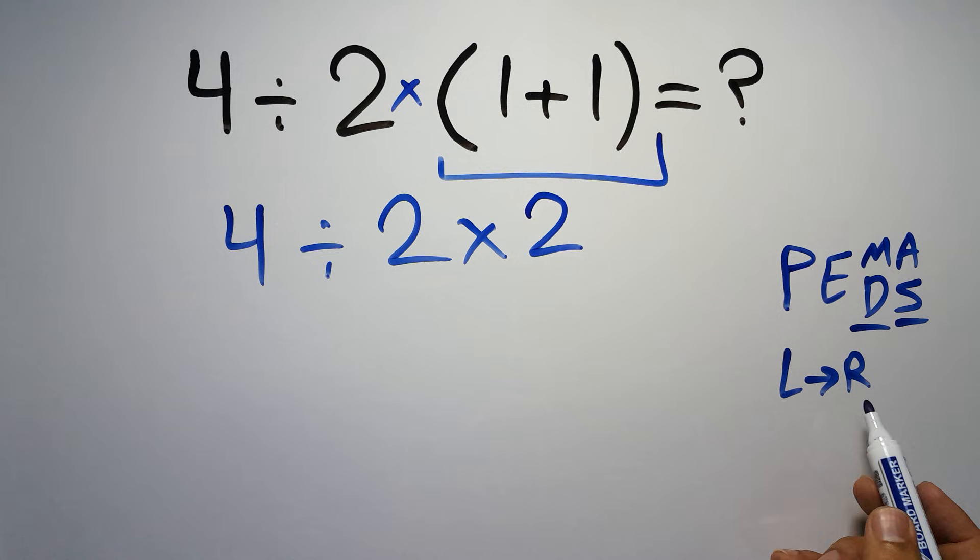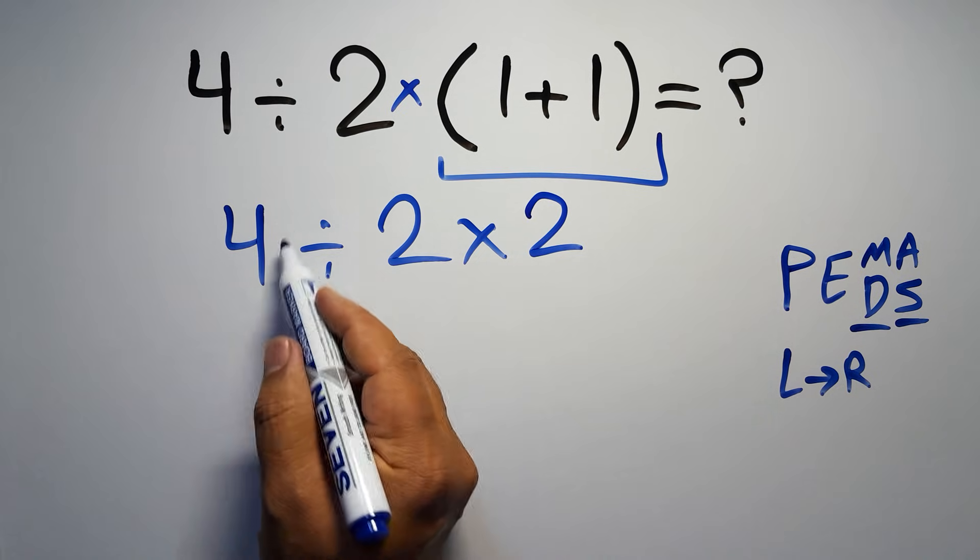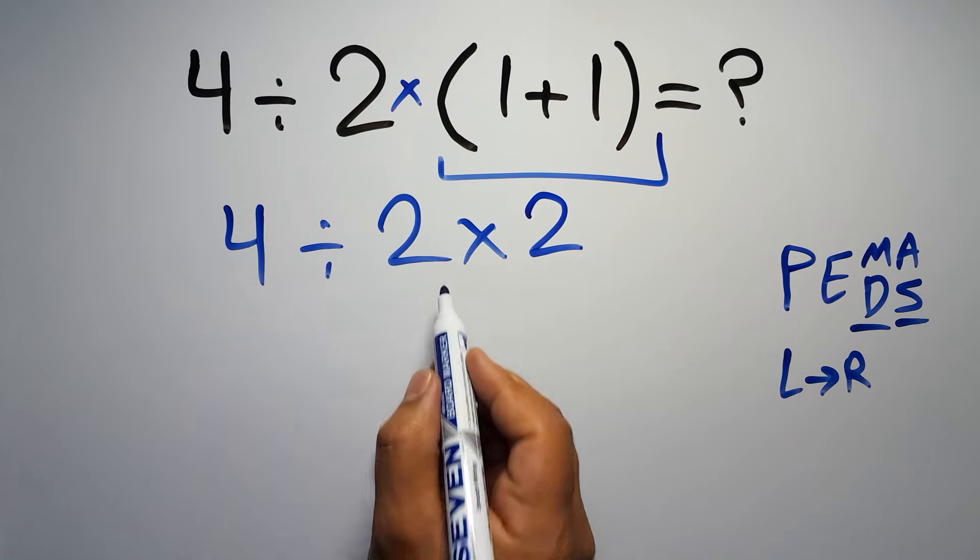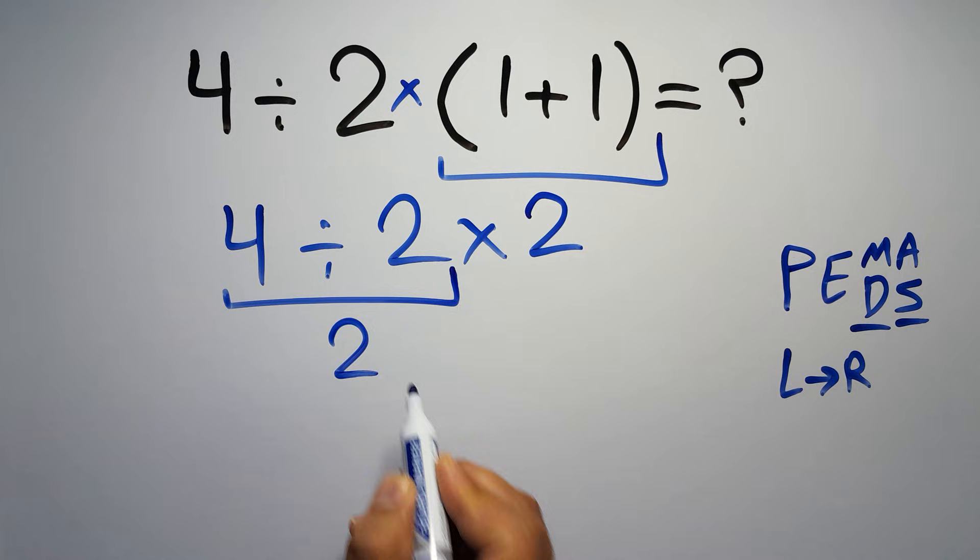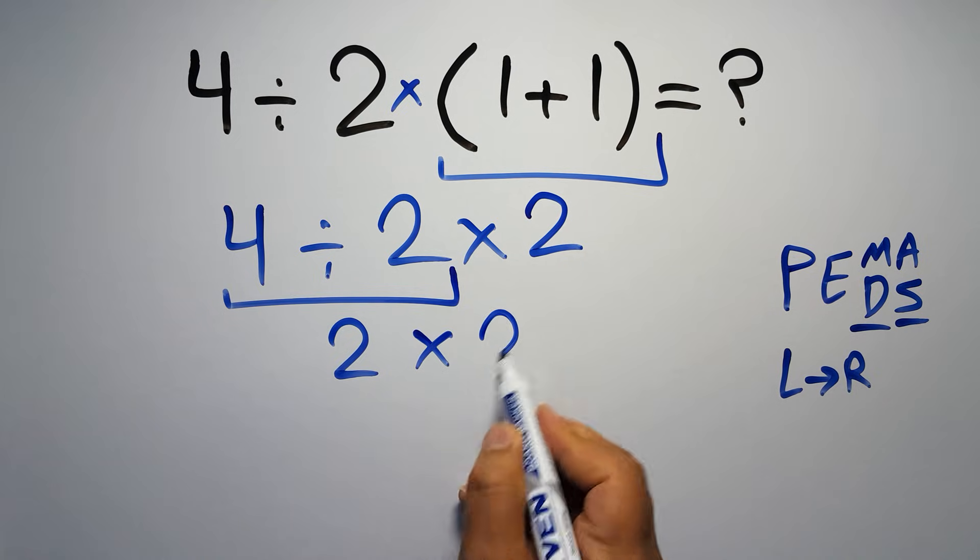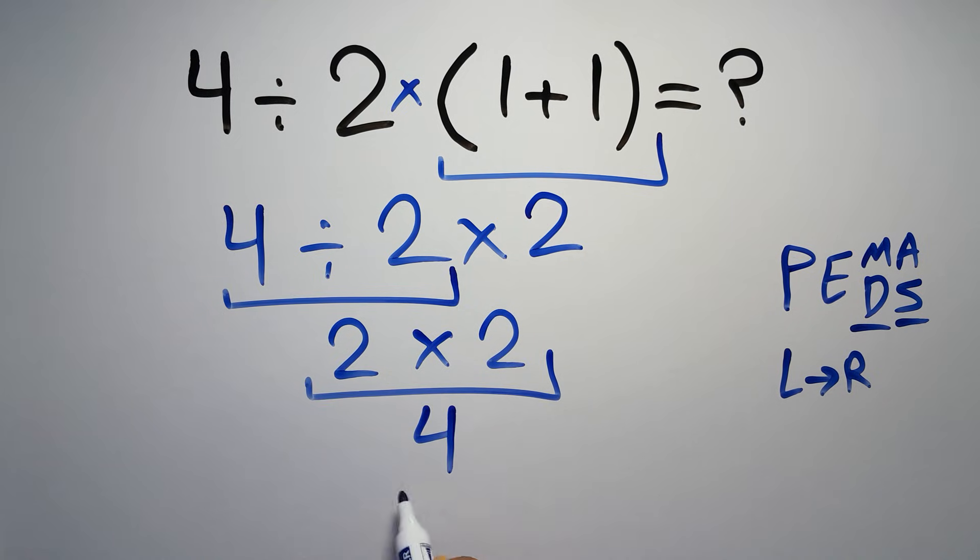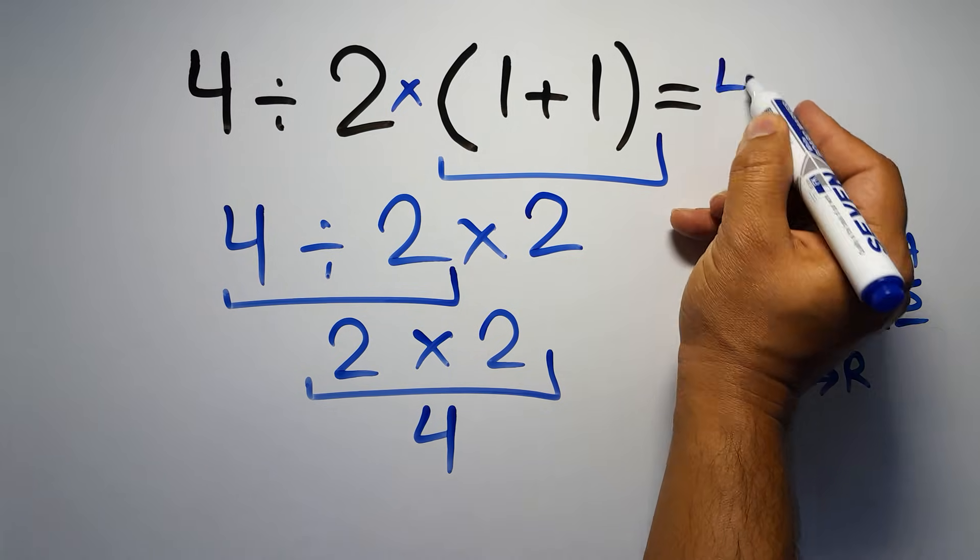have to work from left to right. So here, first we have to do this division: 4 divided by 2 is just 2. So 2 times 2 gives us 4, and this is our final answer to this problem. The correct answer is 4.